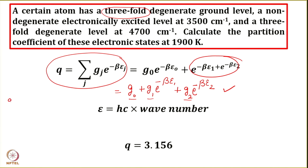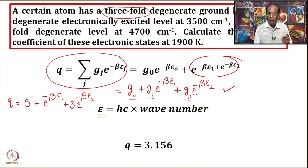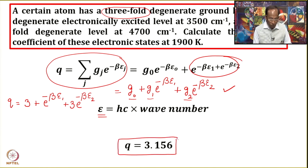So q = 3 + 1·exp(−βε₁) + 3·exp(−βε₂), where the energy ε = hcν̃ and the wavenumbers are given. You can easily calculate the values of ε using Planck's constant, speed of light, and the wavenumber. Once you put in those numbers, the value of the partition function comes out to 3.156.